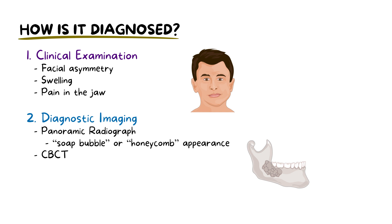CBCT usually reveals the lesion's extent and its relation to the surrounding structures. If further clarity is needed about the tumour's boundaries or bony invasion, MRI and CT scans might be incorporated. The definitive diagnosis comes from a biopsy, where a tissue sample is examined microscopically.